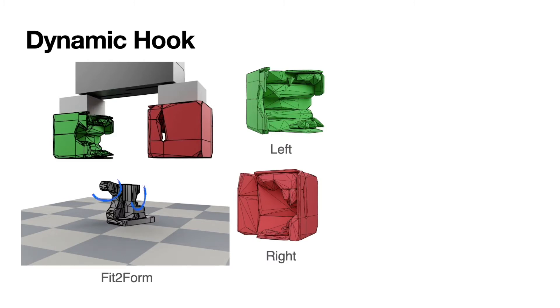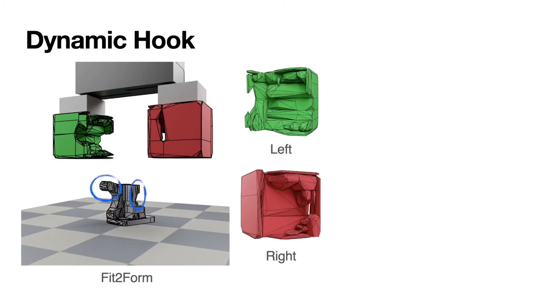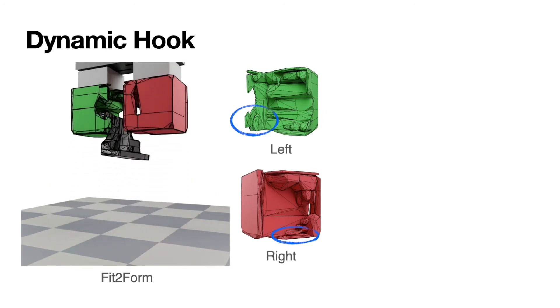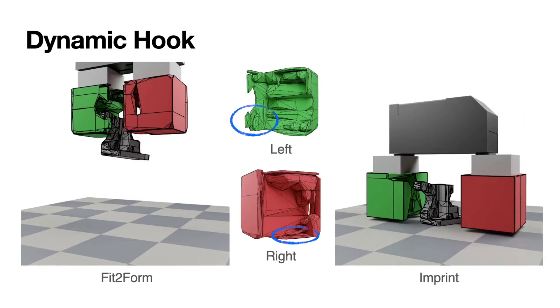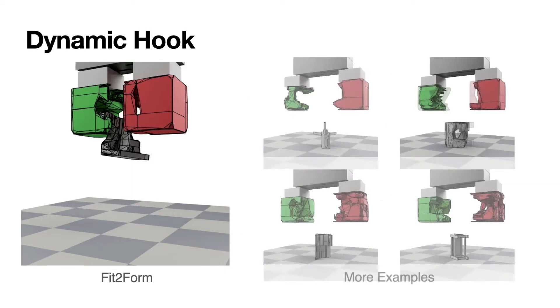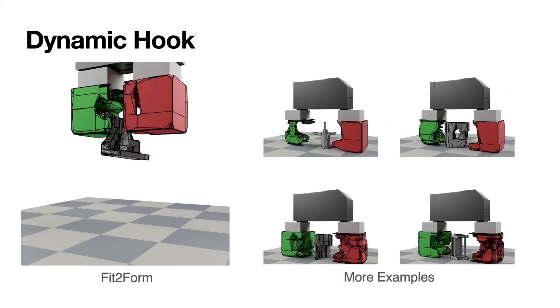The third strategy is dynamic hook, where instead of directly creating a form closure around the target object, the generated fingers hook the target object's protruding structures during the lifting process. On the other hand, imprint fingers fail to grasp in absence of this hooking behavior. Here are a few more examples for dynamic hook.